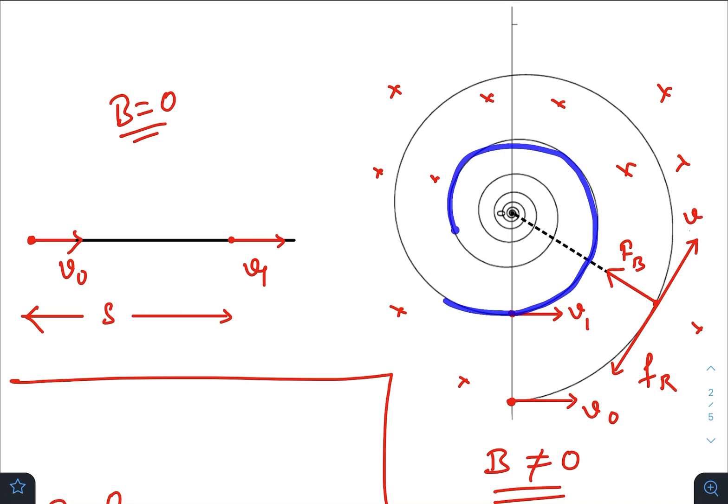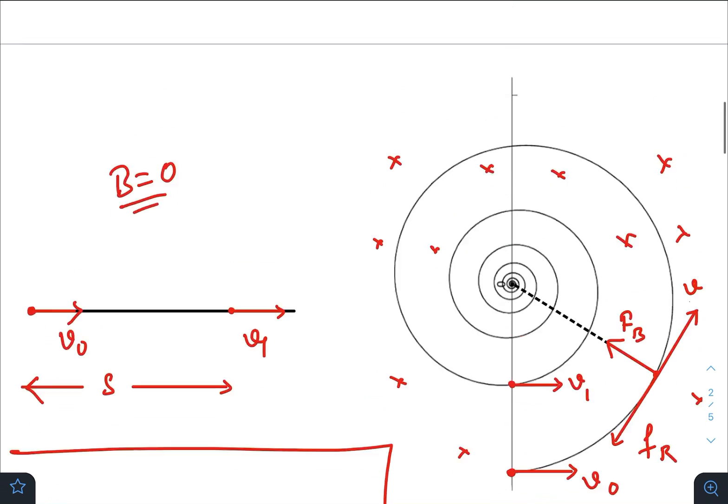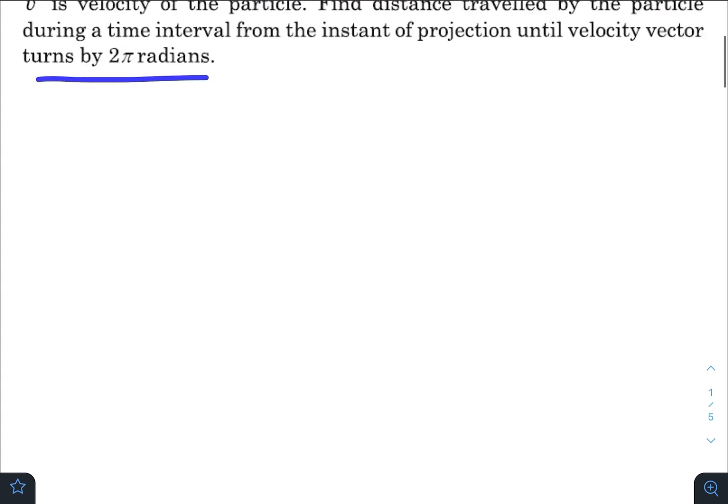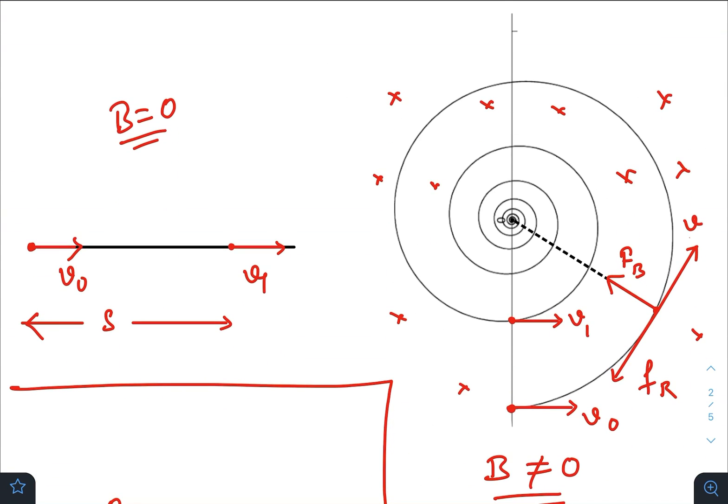In the question they have asked what is the distance travelled until the velocity vector turns by 2π radians. So when the velocity vector turns by 2π radians, the particle must reach at this point.